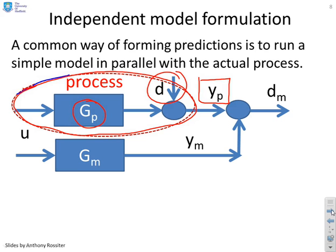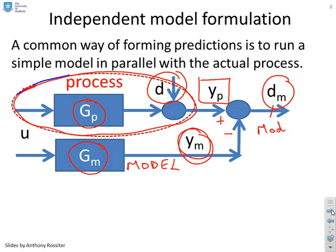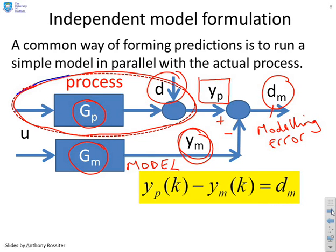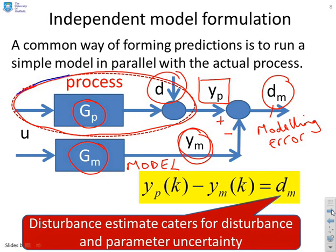And that gives me YP, the subscript P for the process output. Now what I'm going to do is put in parallel with that process a model. So the key thing here is GM represents a model. So I know GM exactly. It's for me to do. And this model has an output, YM. And in essence, if I put here a plus and a minus, this DM represents my modelling error. Because I don't know GP and I don't know D, but I can see what the error is between the process output and my model output. So I can capture this term simply by measuring the difference between YP and YM. And what you will find is this estimate, DM, can cater both for unknown disturbances, D, and also for the fact that there's parameter uncertainty. I don't know GP exactly.